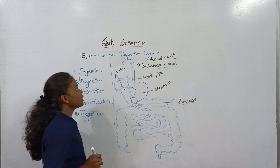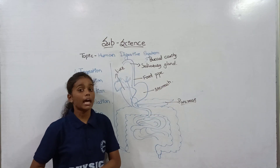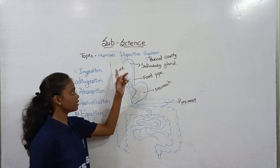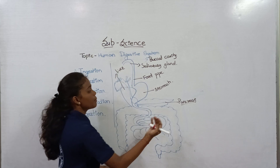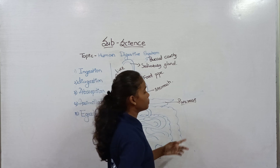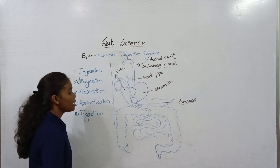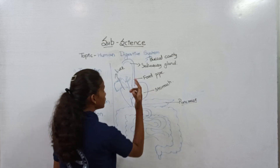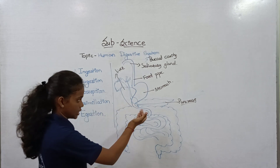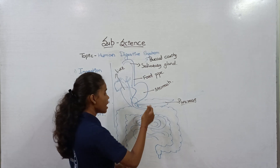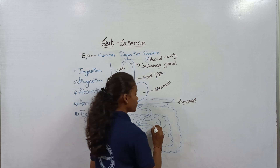Then the stomach transfers this food to the duodenum, which involves the liver and pancreas. The liver and pancreas secrete digestive juices — the liver secretes bile juice and the pancreas secretes pancreatic juice. This food then mixes with these digestive juices and is transferred to the small intestine.